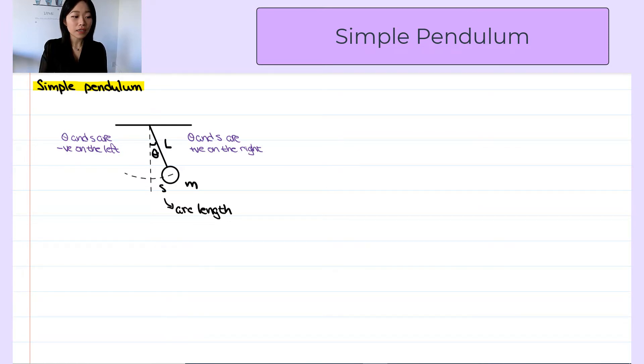Theta and s are positive when they are on the right compared to the vertical line and they are negative on the left.